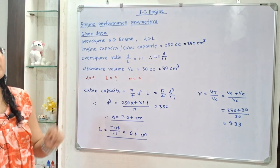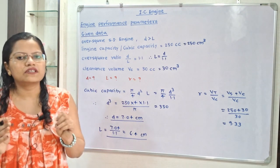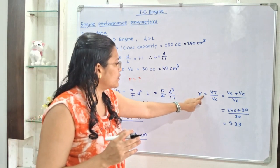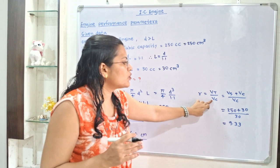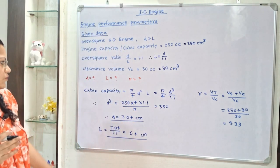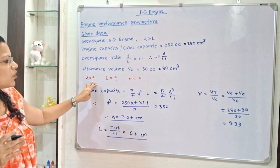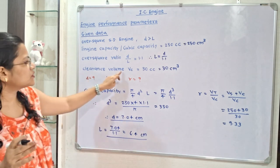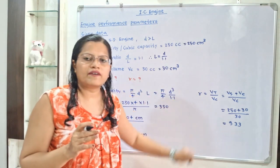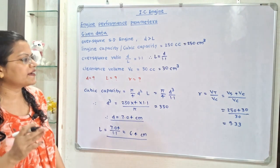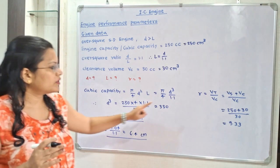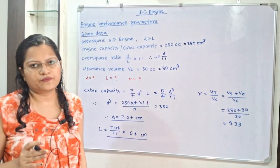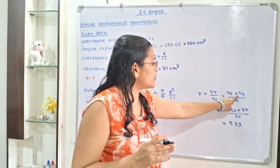Now we will calculate the compression ratio. Compression ratio R is equal to total volume divided by clearance volume. Total volume is not directly mentioned in the question, but it equals stroke volume plus clearance volume, written as Vs plus Vc.